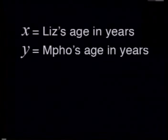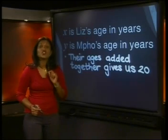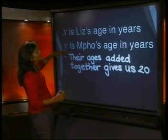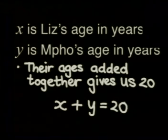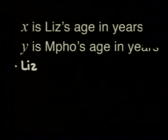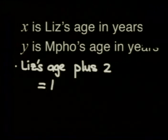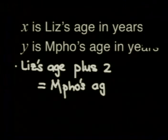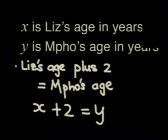Can you make an equation using X and Y with the information that we have? It often helps to write the information in words first so you can set up a formula from the words. Their ages added together gives us 20 — the sum of the girls' ages is 20. That means Liz's age was X and Mpo's age was Y, and we can write X plus Y equals 20. And we know that Mpo is 2 years older than Liz. We can write that Liz's age plus 2 equals Mpo's age, which means X plus 2 equals Y.